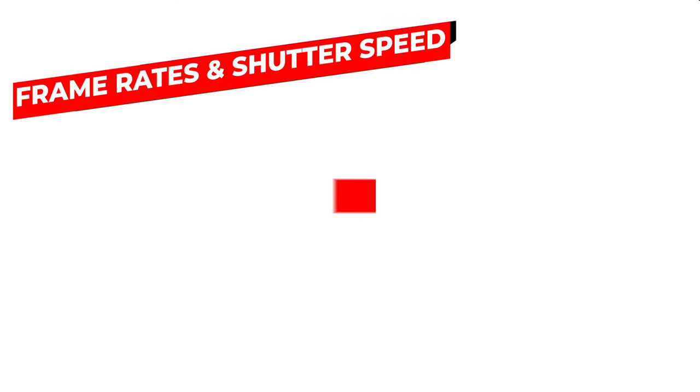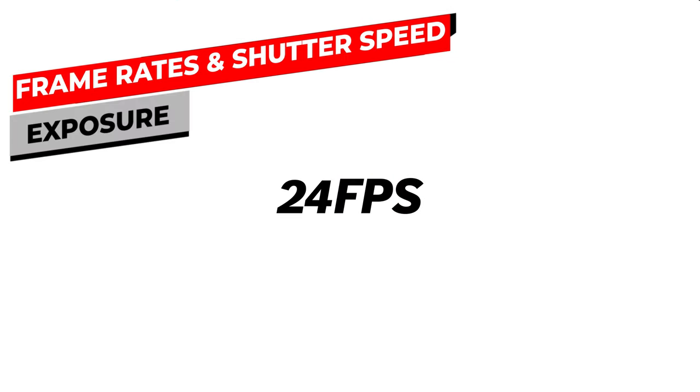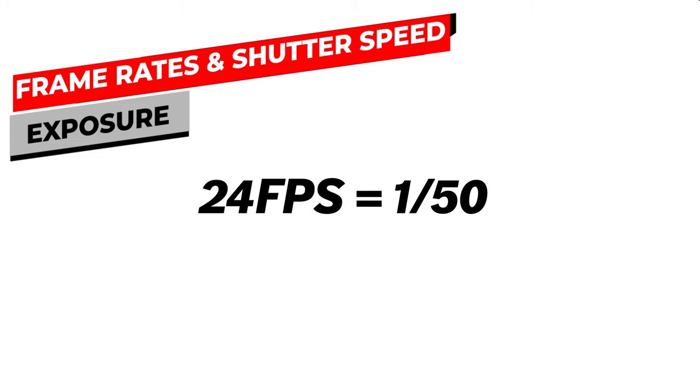We get the understanding that shutter speed is a pretty easy thing to determine when you're trying to get your exposure correct. For example, if you're shooting 24 frames per second on a DSLR camera, you would have a shutter speed of 1/50th, as that's the closest representation to 48 that we have.